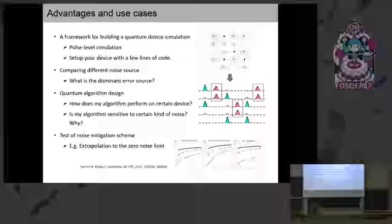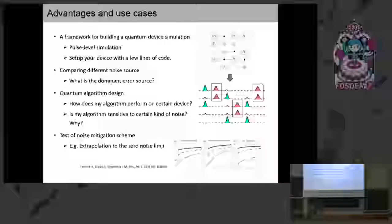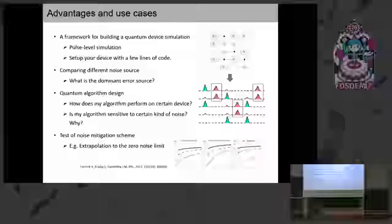In addition, you can also use it to test some noise mitigation schemes. There's a paper from IBM where they use extrapolation to mitigate noise. Basically, they have a parameter that characterizes the strength of noise, they run their real physical device for different noise strengths, and then extrapolate back to find what the result looks like if there is no noise. Because the argument is basically at the level of the Hamiltonian, this module would be useful for verifying their results or maybe even doing some improvement.